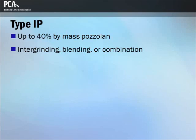Type IP cements are Portland pozzolan cements and are used for general construction. The pozzolan content of these cements is up to 40% by mass. Type IP cements are manufactured by intergrinding, blending, or a combination of both.